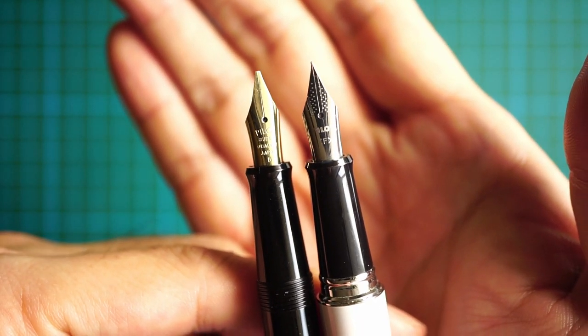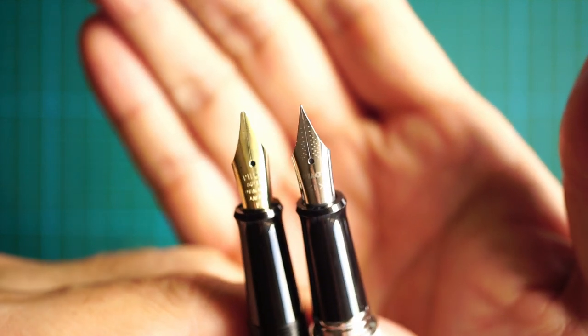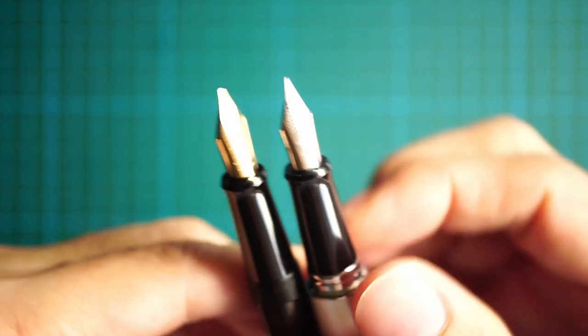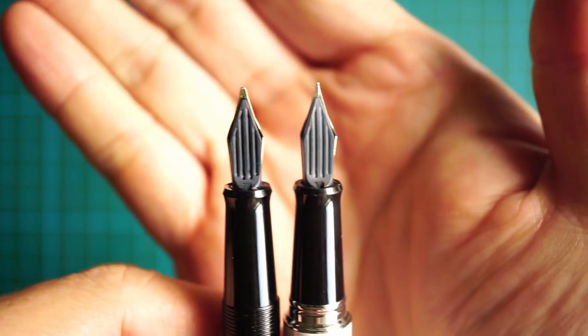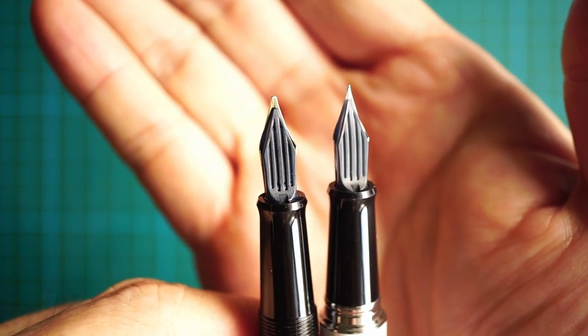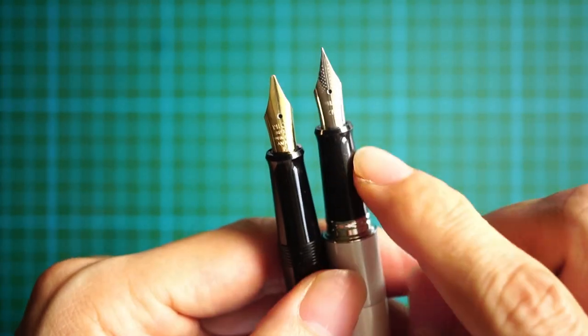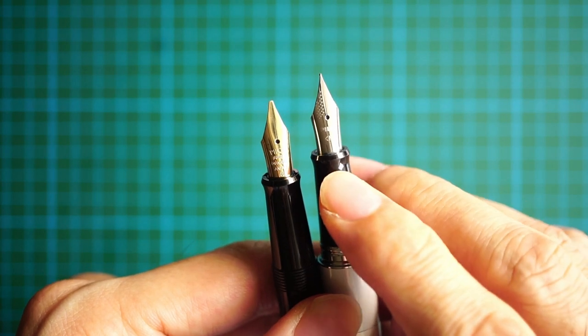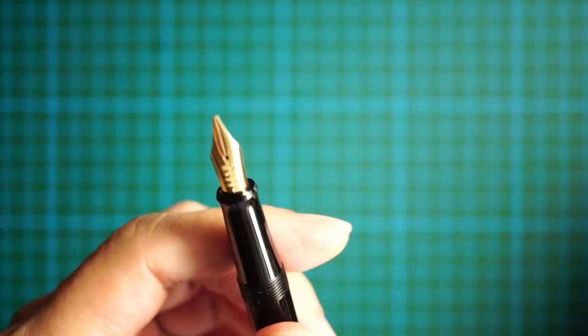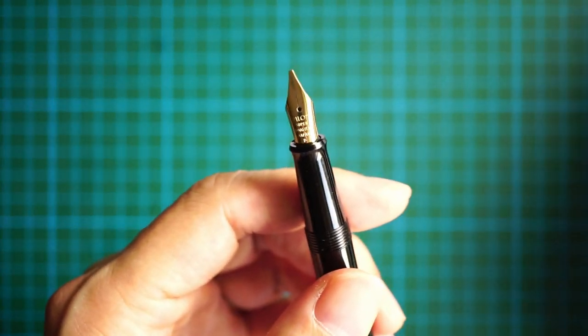you can tell that they have a very similar design. In fact, I'm not 100% sure, but I'm pretty sure that you could interchange the nibs if you wanted to. Just flipping the nib around, you can take a look at the feed and you can see that it looks very similar. Obviously, one nib is a fine and the pen which I'm going to look at today is actually a broad.